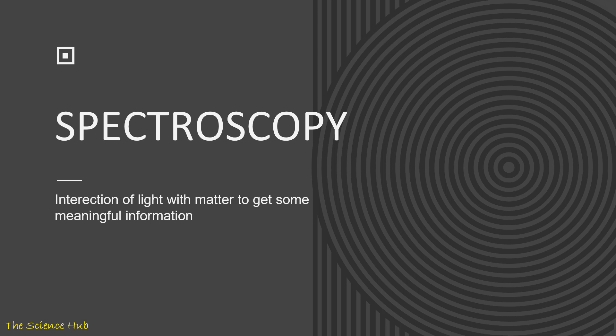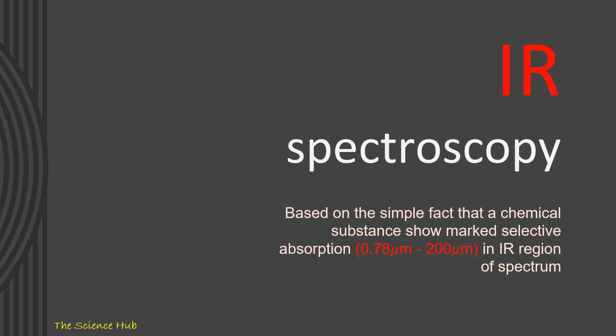There are many spectroscopic techniques like UV spectroscopy, IR spectroscopy, atomic absorption spectroscopy, X-ray spectroscopy, nuclear magnetic resonance spectroscopy and many more. Now today we are going to discuss IR spectroscopy. IR means infrared, so this name suggests that we are using IR radiation as a source in this spectroscopy technique.